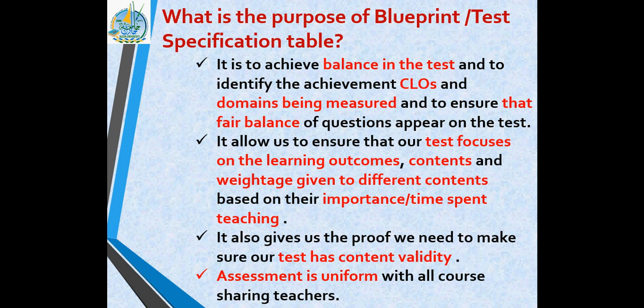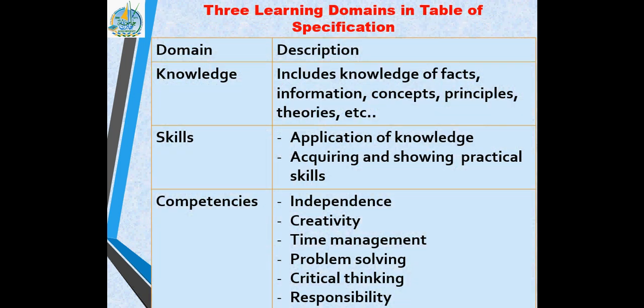The three domains used in our table of specification are knowledge, skills, and competencies. Knowledge includes facts, information, concepts, principles, and theories for each course. Skills is the application of knowledge which students attain from the starting lessons — it is the practical form. After we teach certain units, students acquire basic knowledge and then move on to apply it in a practical manner.